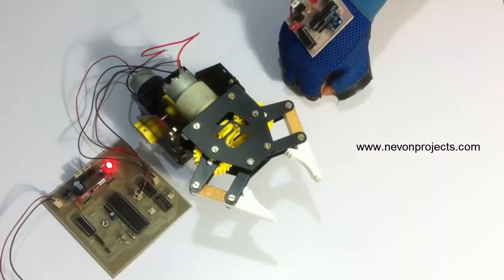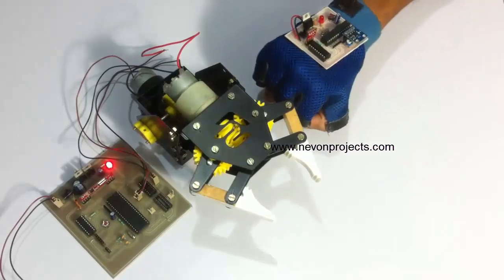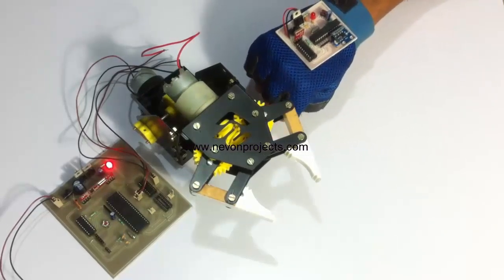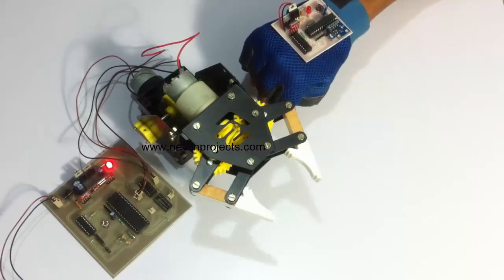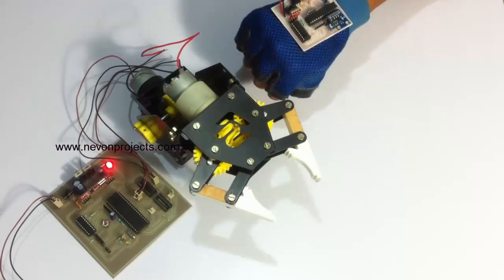For example, the user just needs to move his arm forward, backward, left, and right. When he moves his arm in such a way, he can control the movement of the robotic arm just by using hand gestures.